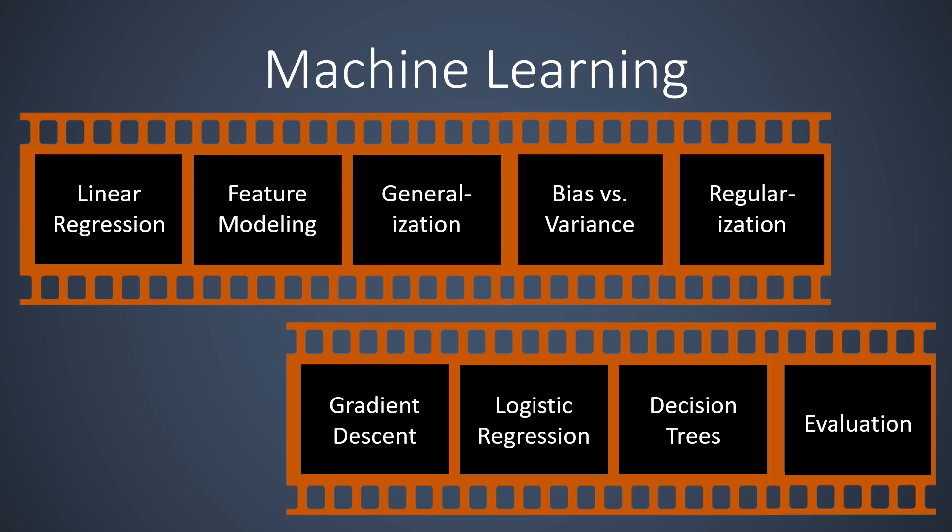Finally, we have a short video about evaluating our success. For regression, we can simply compute and compare loss functions. For classification however, the loss function is not really intuitive. Instead we introduce simple concepts such as the confusion matrix and precision recall. We also talk about the ROC curve, which can help us to choose the right classification parameters.